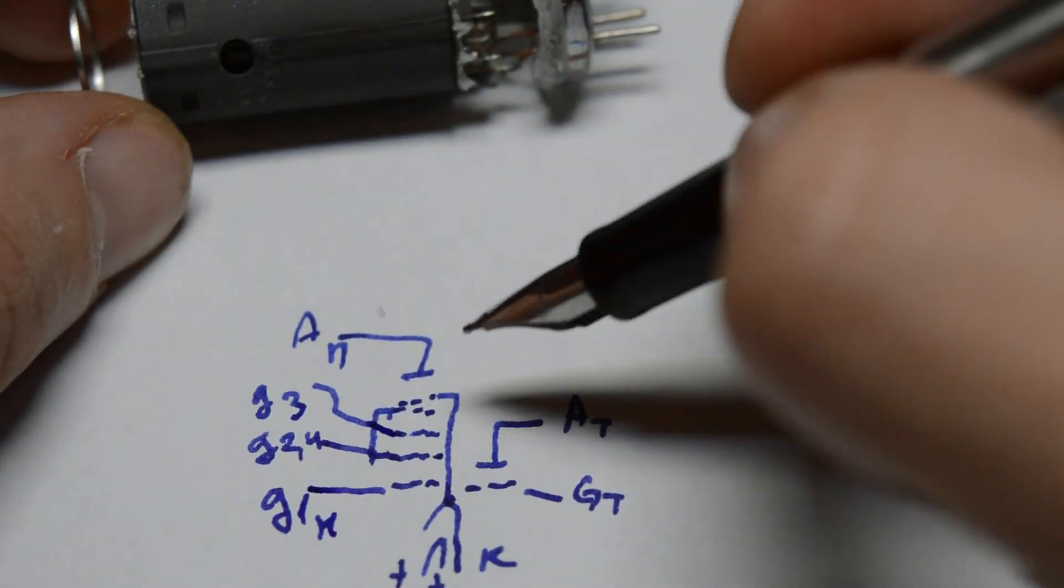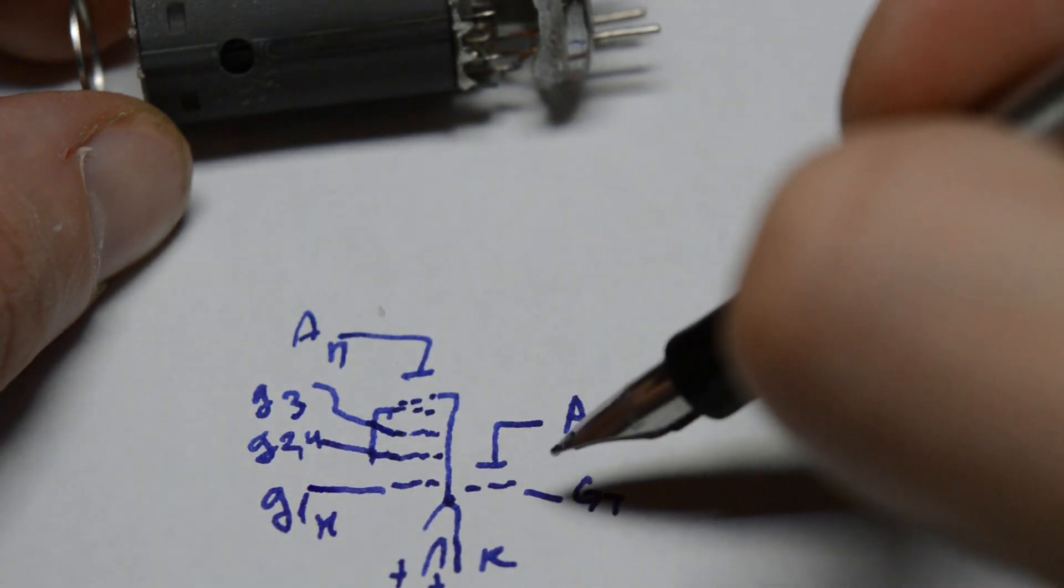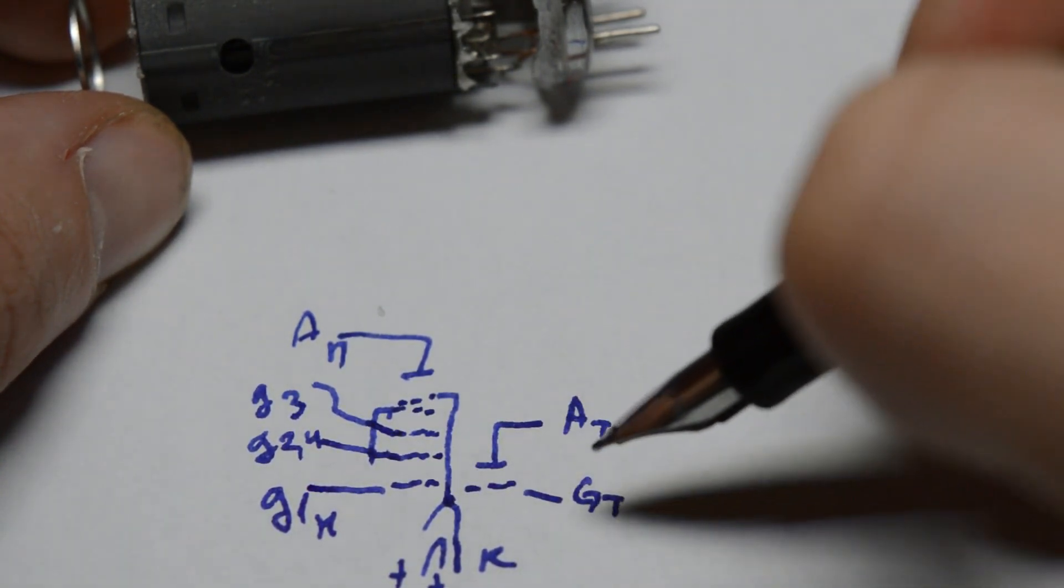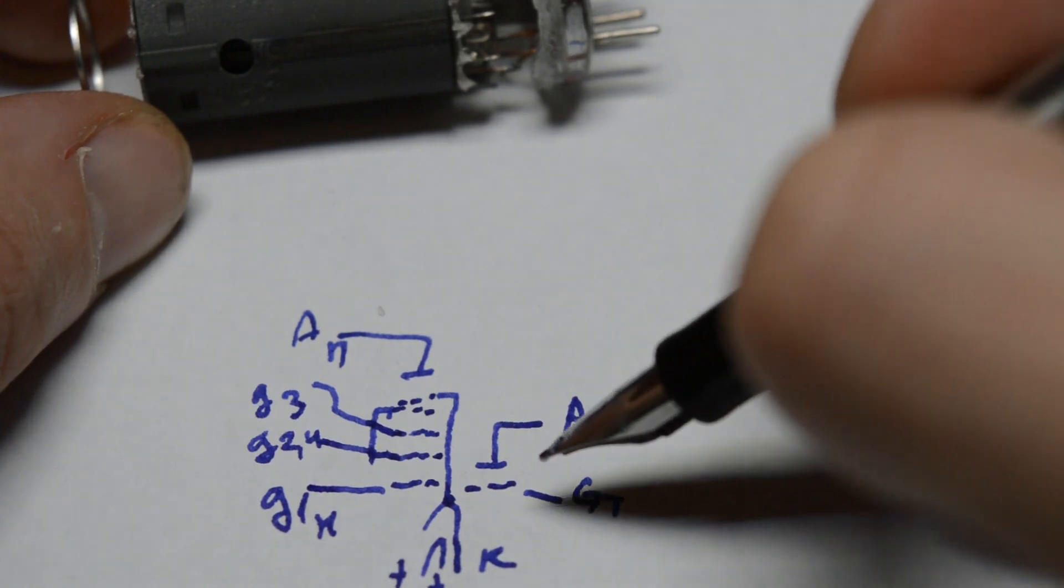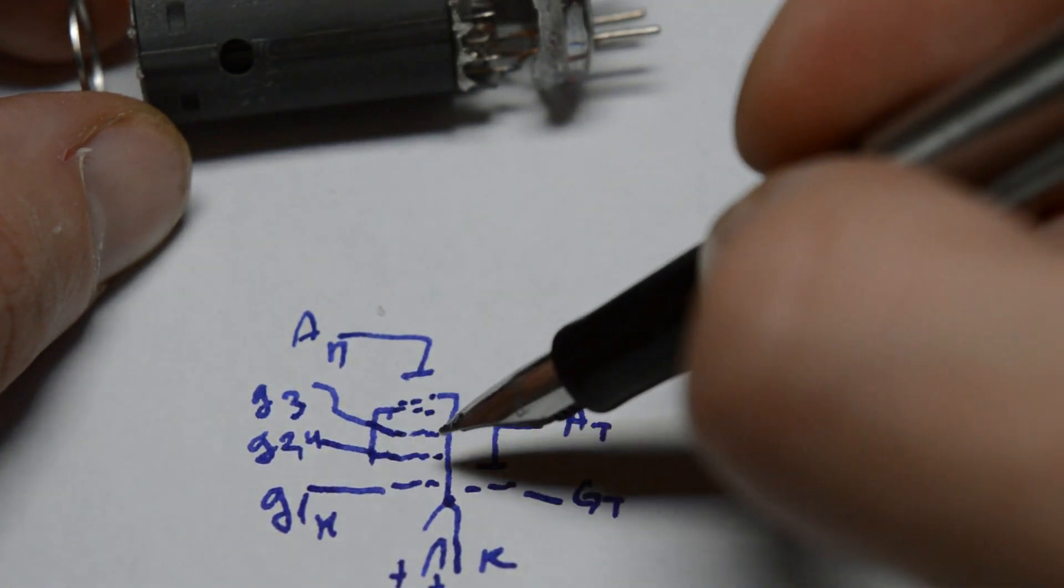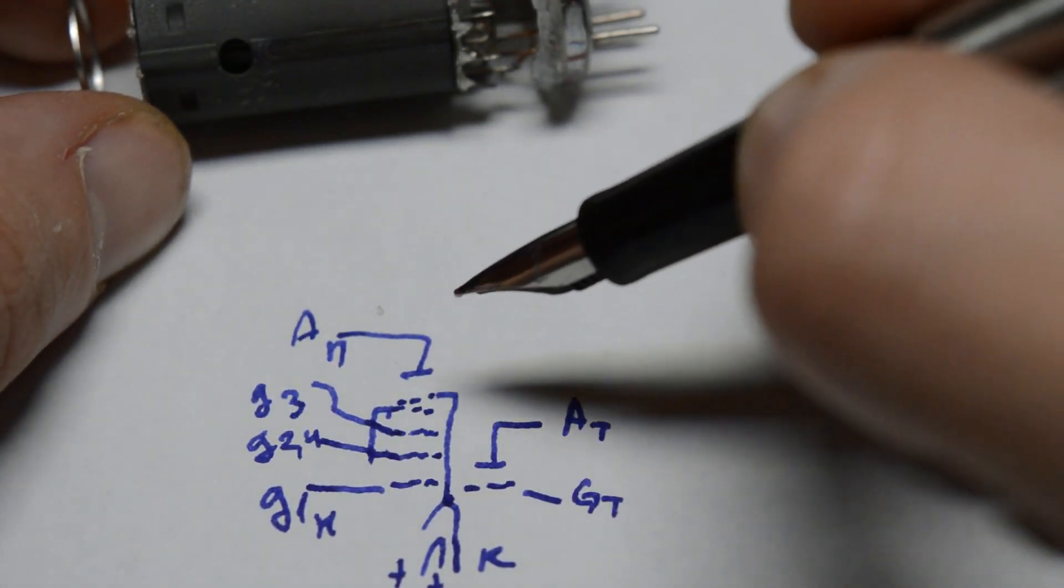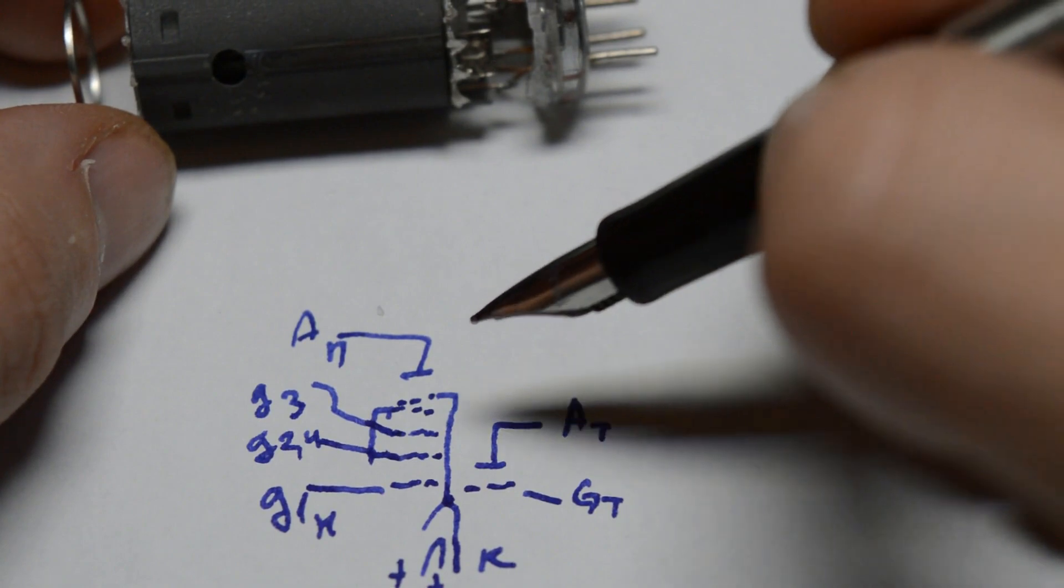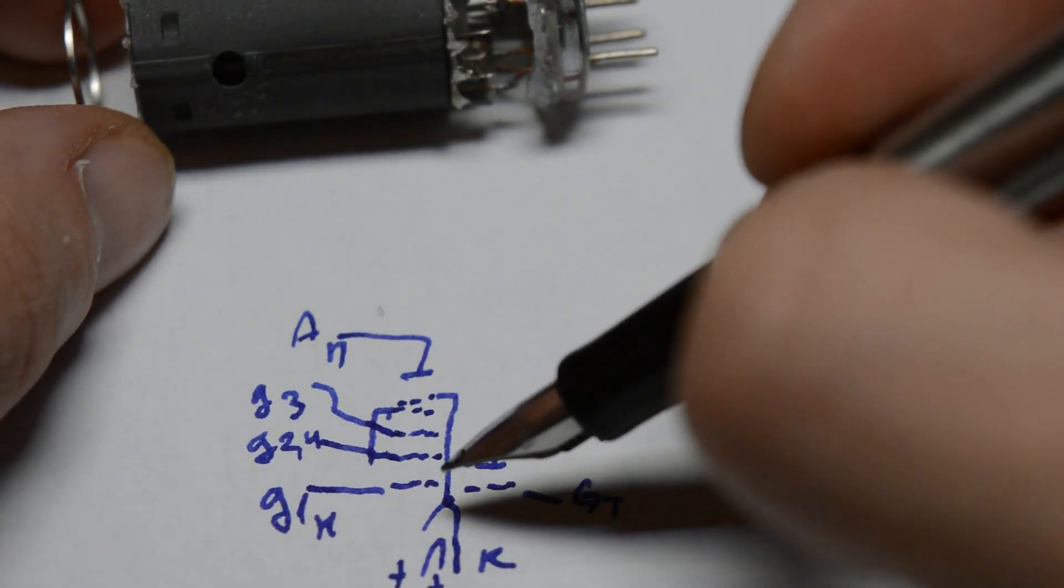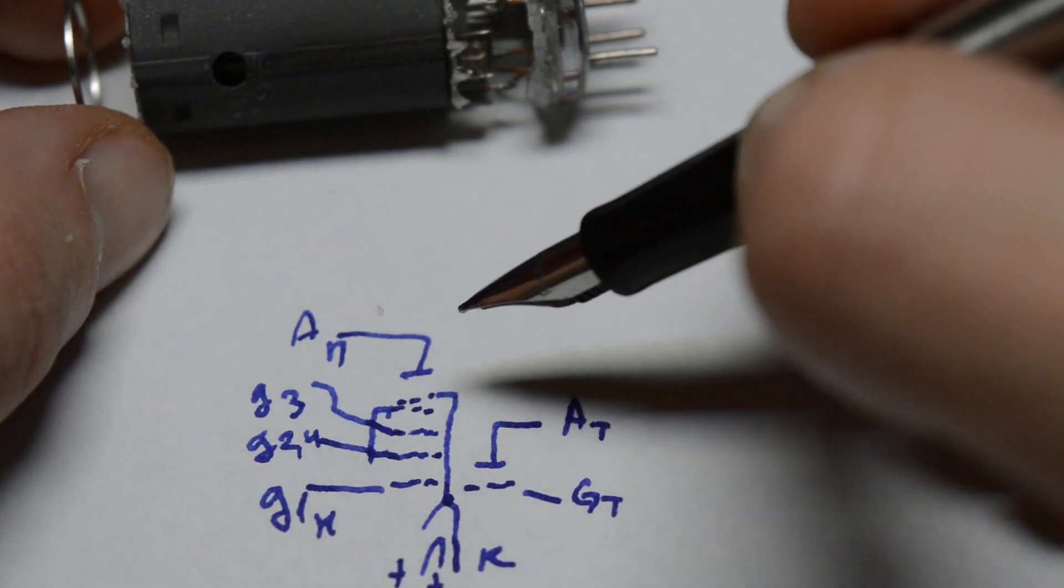So again, why so many things? Well, on the triode side, the single grid is responsible for signal conditioning. On the left side in the heptode, we have the first and the third grid responsible for signal. Second and fourth are screen grids. So these grids are there to reduce internal capacitances between the various grids. And then the fifth grid is a suppressor grid.